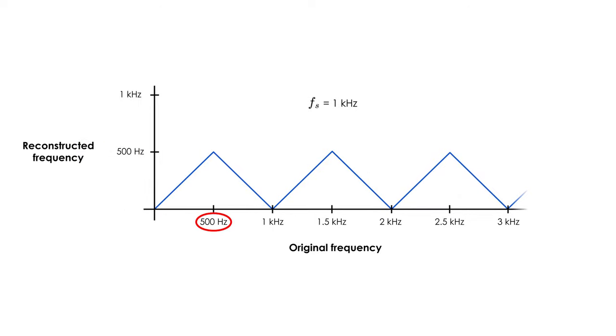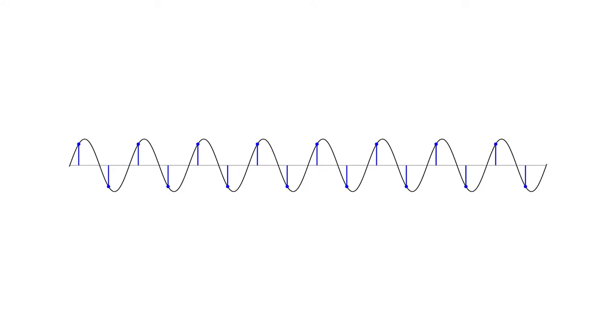In the case of having an original frequency of 500 Hz, and a sampling frequency of 1000 Hz, we would be taking exactly two samples per cycle, which gives us a triangle wave. Although it is true that it is a different waveform than the original, at least it still has the correct frequency.